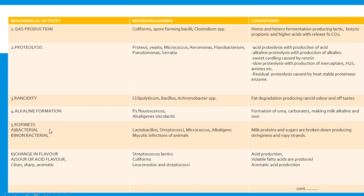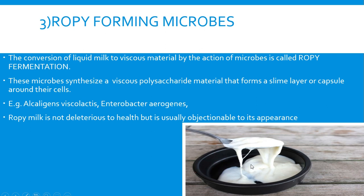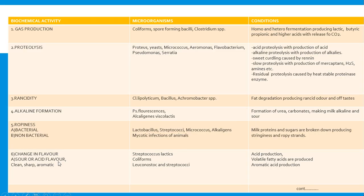Ropiness or ropy fermentation occurs due to two things: bacterial and non-bacterial. The bacterial type includes Lactobacillus, Streptococcus, Micrococcus, and Alcaligenes, where milk proteins and sugars are broken down, producing stringiness and ropy strands. The non-bacterial type is related to mycotic infections of animals, which can also cause ropy fermentation of the milk.